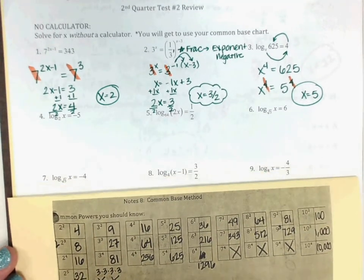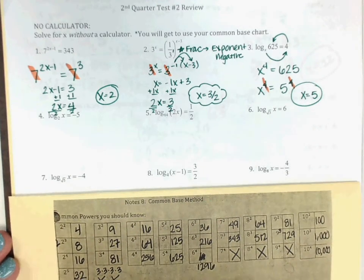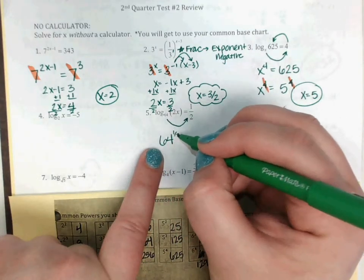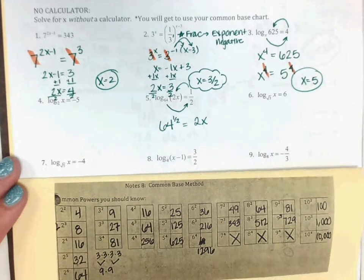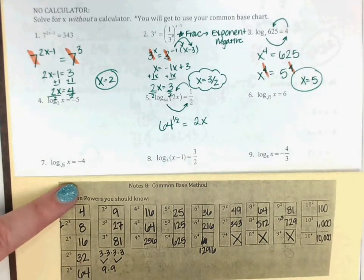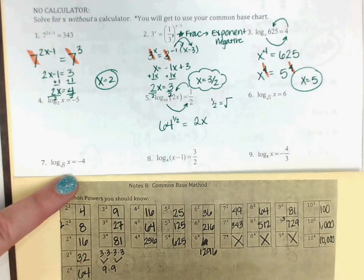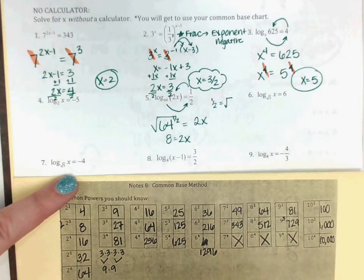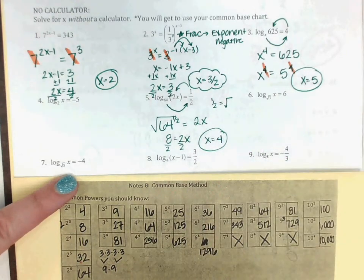Let's do number 5. If it's a log, I loop it: loop 64 up to the 1-half, equals 2x. What is a 1-half power the same as? Square root. Remember that a 1-half is the same as a square root. So I'm going to make that a square root of 64. What's the square root of 64? 8. And if 8 equals 2x, divide by 2 on both sides — x equals 4.